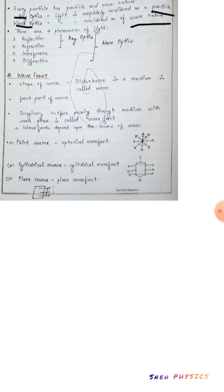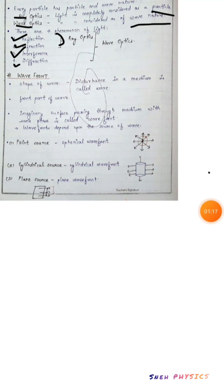We already know that light follows and shows four phenomena. The first one is reflection, the second is refraction, the third is interference, and the fourth is diffraction. We have already studied reflection and refraction in Ray Optics. Now, the third and fourth phenomena — interference and diffraction — are not shown by Ray Optics. All four phenomena are shown by Wave Optics, and only two phenomena are shown by Ray Optics.